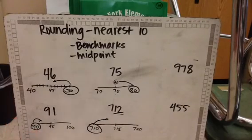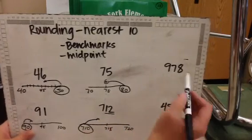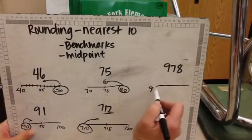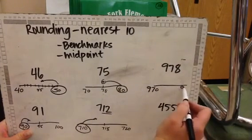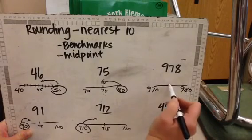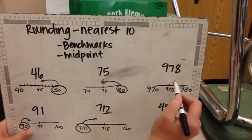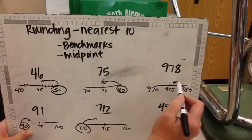Another example right here: I'm in the seventies, so it's nine hundred seventy and nine hundred eighty. My midpoint is nine hundred seventy-five. My number is right here, after the midpoint, so I'm going to round to nine hundred eighty.